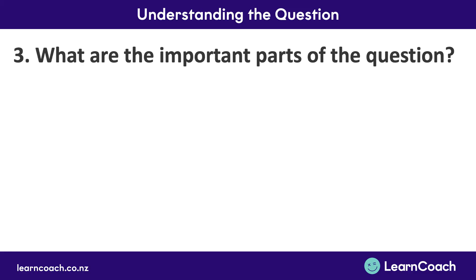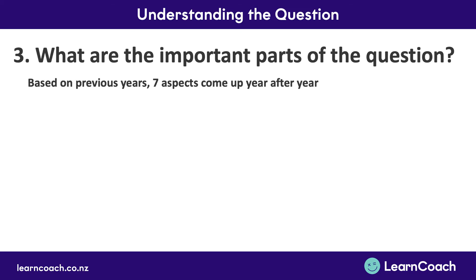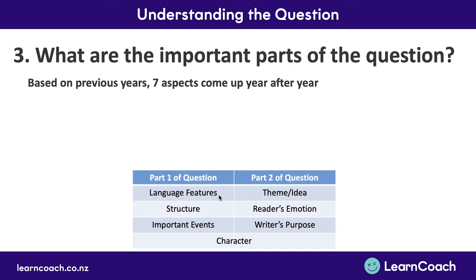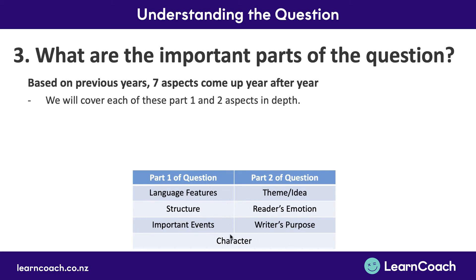Now we're going to go over what the important parts of the question are — the components that come up year after year. Based on previous years, seven aspects come up consistently. For part 1: language features, structure, and important events come up year after year. For part 2: theme or idea, reader's emotion, and writer's purpose come up year after year. Character comes up commonly for both part 1 and part 2. We'll cover each of these aspects in depth with a dedicated video later. They come up in different combinations — for example, how important events show a theme one year, or how important events show the writer's purpose another year.